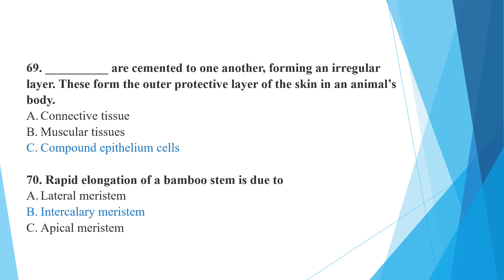Rapid elongation of a bamboo stem is due to intercalary meristematic tissue, which is a type of meristematic tissue.